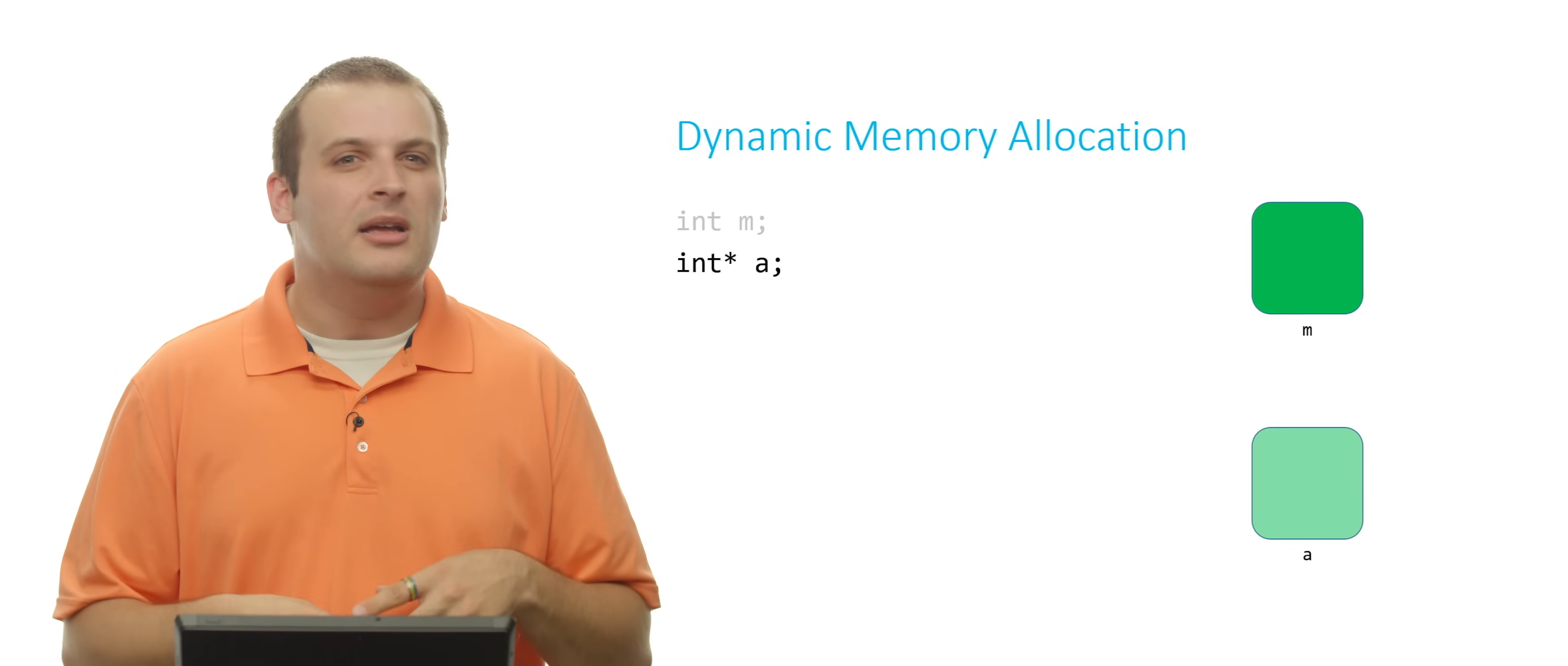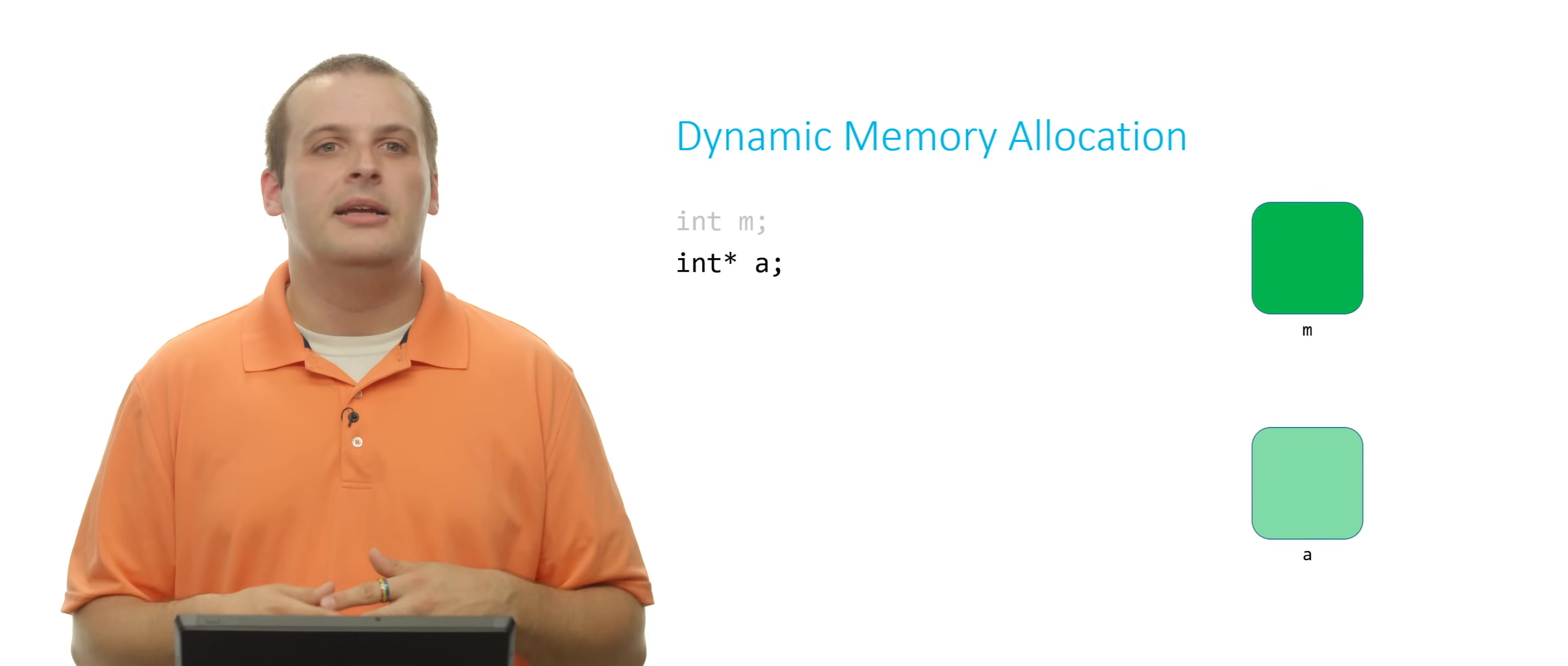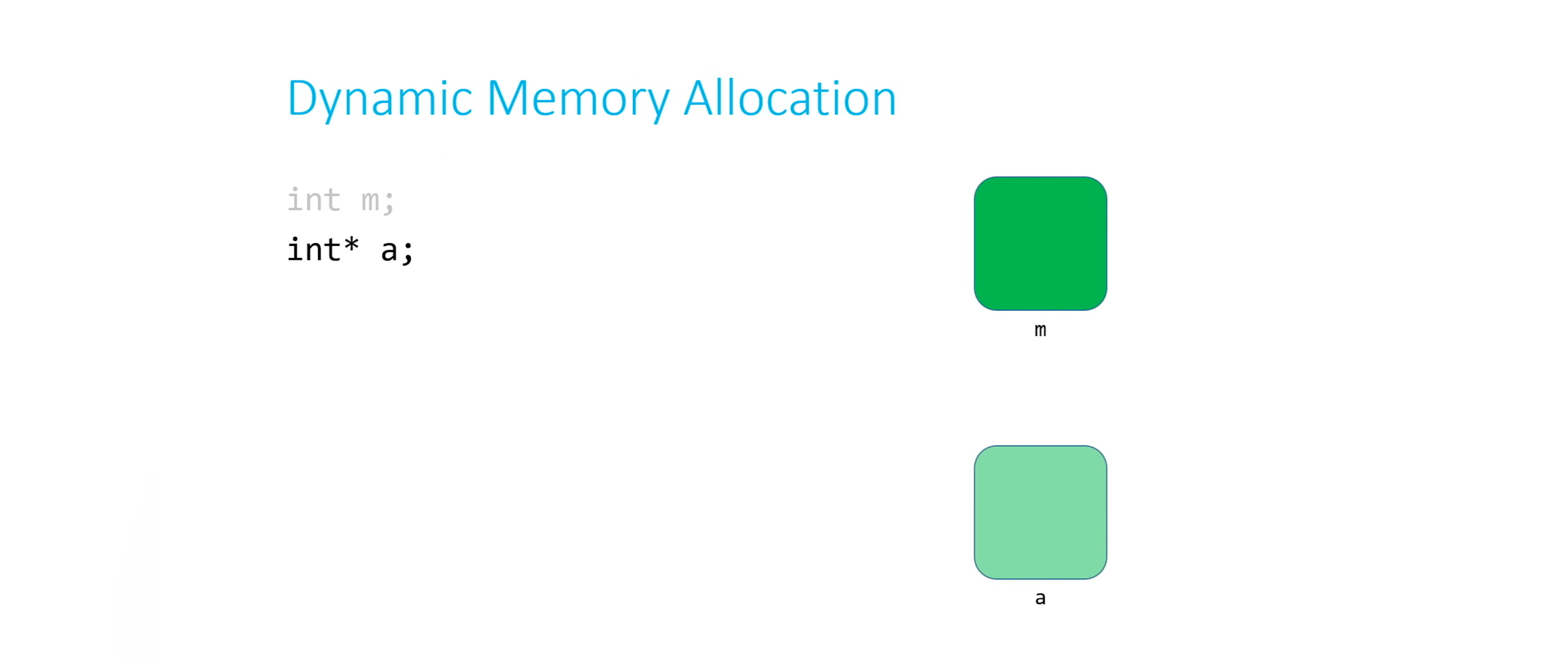It's not a green box because that's for ints. But int stars are sort of greenish. They refer to ints. So this is another box. And this one is called a.